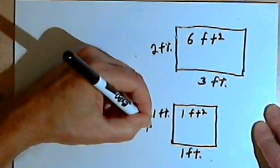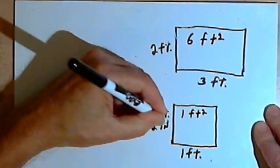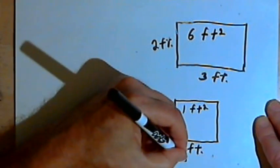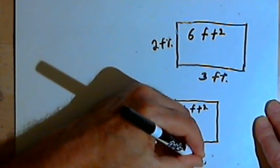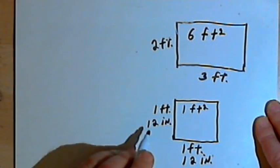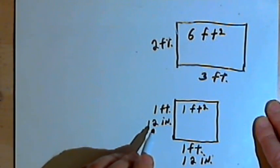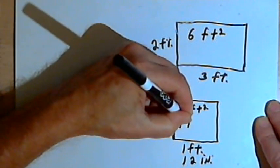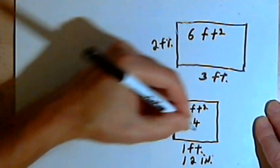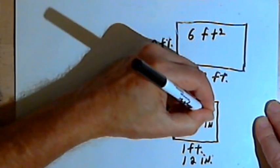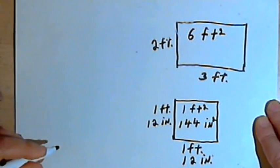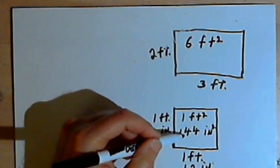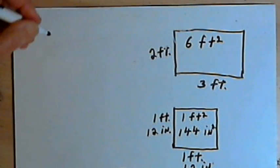Now 1 foot is the same as 12 inches, so its dimensions could also be written as 12 inches by 12 inches. To find its area in square inches, I would multiply 12 inches by 12 inches. 12 times 12 is 144, so I would have 144 square inches. Therefore, 1 square foot is equal to 144 square inches.